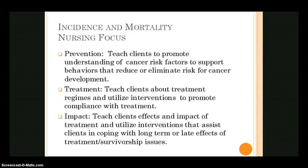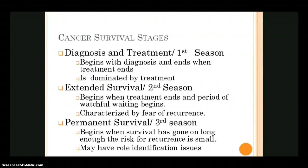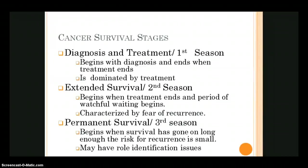We consider cancer survival in stages. The first stage is diagnosis and treatment. The stages are also called first, second, and third season, but that nomenclature is falling by the wayside, so we'll focus on diagnosis and treatment, extended survival, and permanent survival. The diagnosis and treatment stage starts when the person is diagnosed and ends when treatment ends. It's very common for the patient to fall into the role of a cancer patient, and sometimes they take on that as a new identity or fall into the role of victim, with a real emphasis on going to appointments and following the regimen.